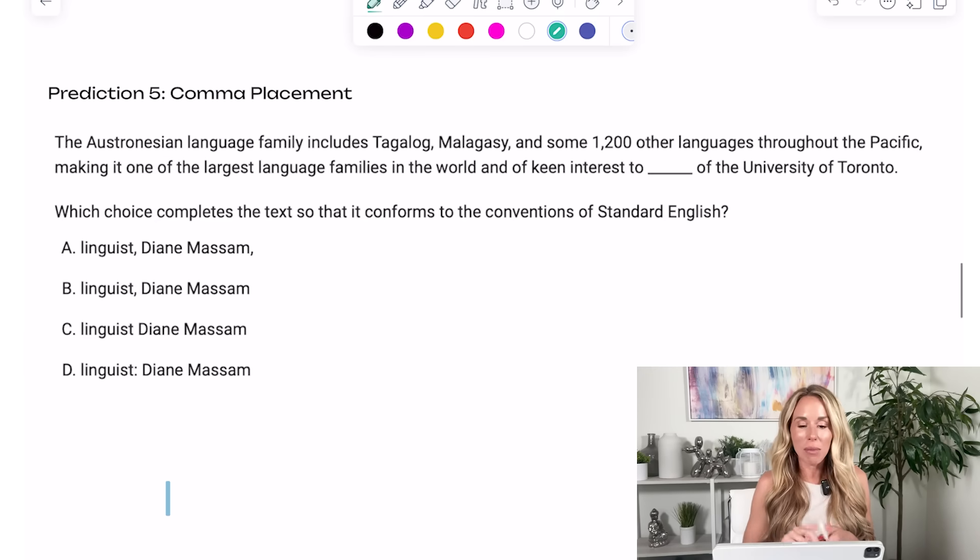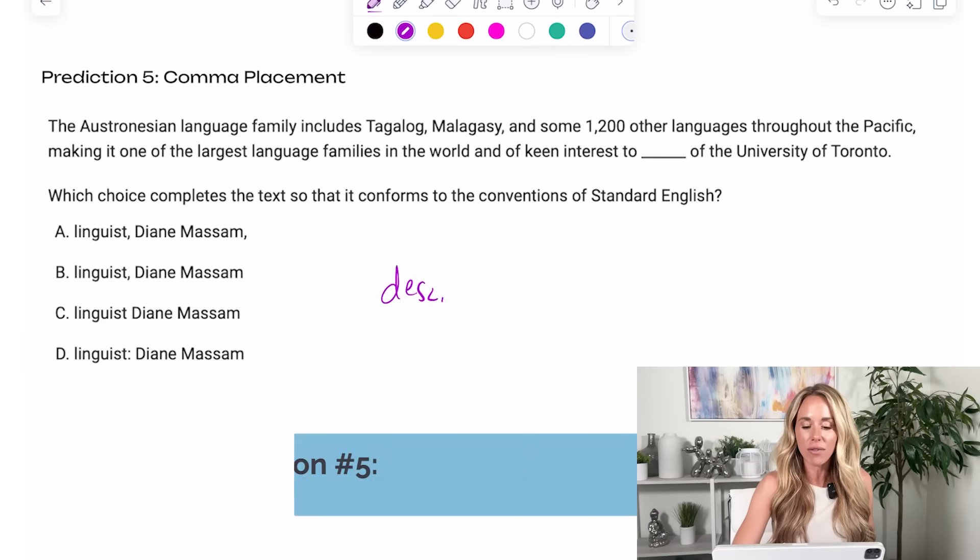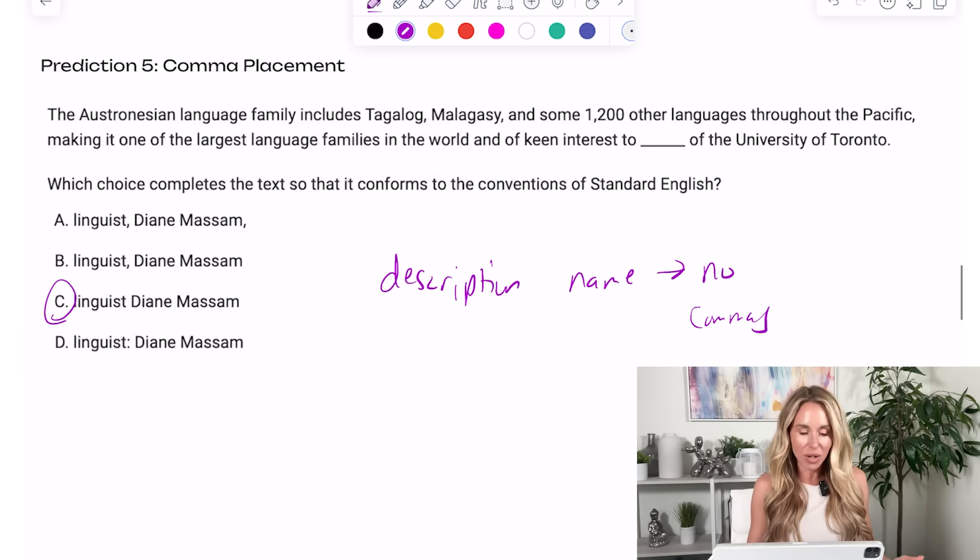All right. My fifth prediction deals with comma placement. Here's a rule that comes up over and over again. If you have a description before the name, you don't need commas. Just know that. So I'm going to look for the one that says linguist Diane Massam. I can read right through that. I don't need any punctuation marks at all. I'm going to go with C.